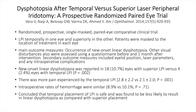Other LPI complications include corneal burns, hemorrhage — which you can mitigate by pressing the lens against the cornea — late closure of iridectomy, posterior synechia formation, transient IOP rise, and uveitis. It's important to keep all of these in mind. We sometimes think of LPI as an innocuous procedure, but it can result in significant complications.